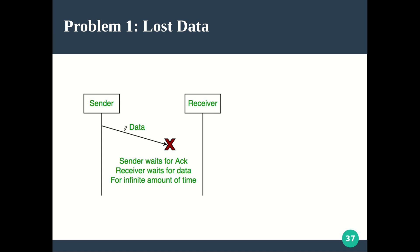The sender starts sending some information and the receiver is supposed to receive, process, and then send the acknowledgement back. Whenever the sender gets the acknowledgement, it will send the next frame. Now, the very first situation: the data being sent by the sender itself is lost on the way. The sender waits for the acknowledgement, but the receiver is not getting anything.